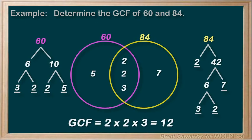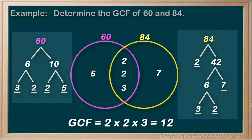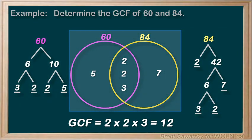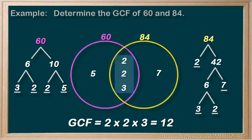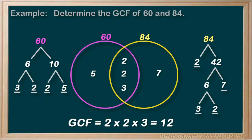In this tutorial, we explored a method for determining the greatest common factor of two numbers using both factor trees and a Venn diagram. It's certainly not the only way to find a GCF, but it's a solid, organized approach. We use factor trees to identify all the prime factors, organize them into a Venn diagram, and then multiply all the numbers in the overlap region to get the greatest common factor. If there are no numbers in the overlap area, then there are no common factors between the two numbers.